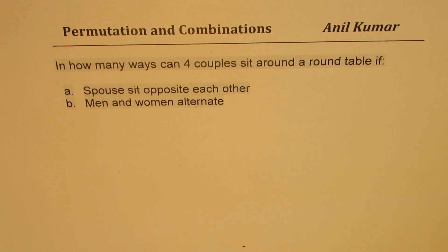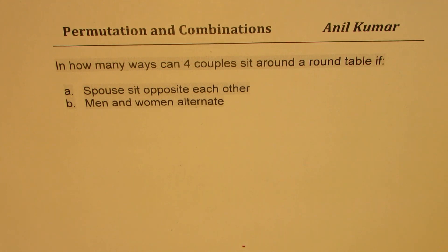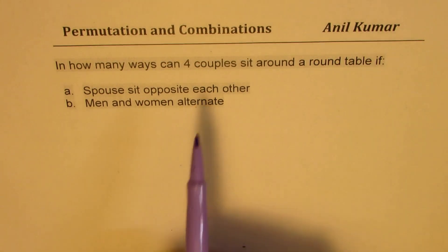I'm Anil Kumar. Welcome to my series on permutation and combination. Here is a very interesting question asked by one of our subscribers who wants to understand how many arrangements can we make with four couples when they sit around a round table or when they sit in a straight row. In this particular video we'll talk about their positions on the round table.